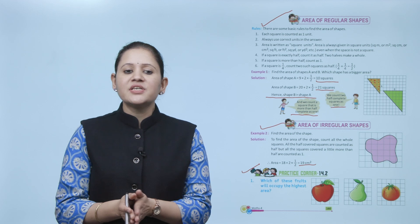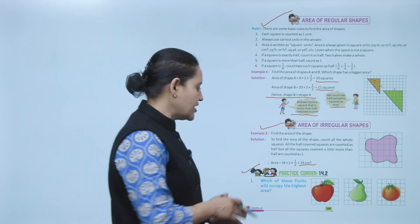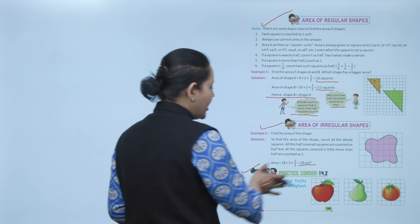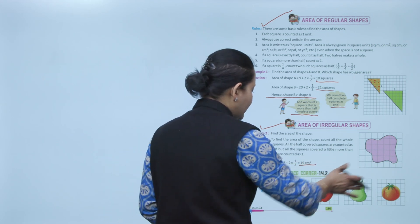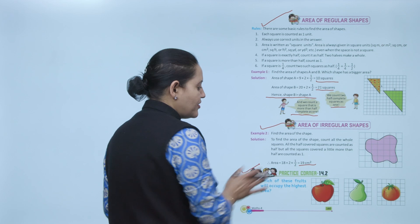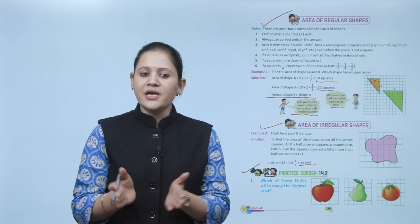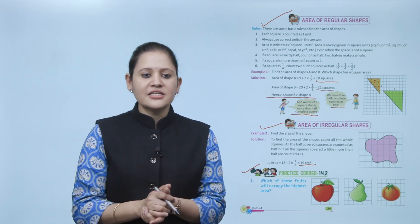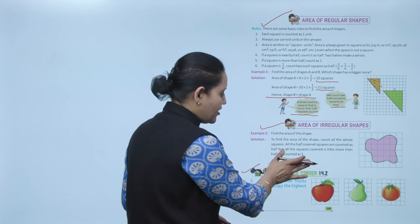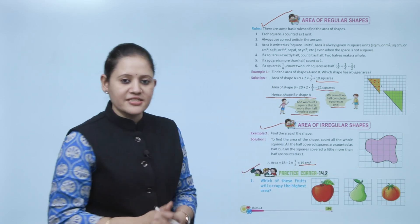Practice corner 14.2: which of these fruits will occupy the highest area? Count the squares to find the area, then find which occupies the highest area. Count the squares and find the area for apple, pear, and orange, and write the answer.